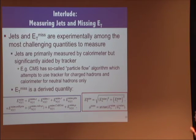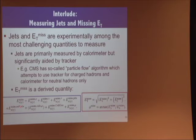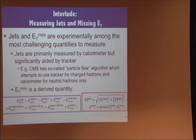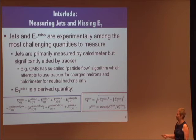Missing ET is in its very nature a derived quantity — basically the sum of missing energy contributions from electrons, photons, taus, jets, soft jets below 25 GeV, the calorimeter part of muons, and muons themselves. In some sense it doesn't get calibrated separately, but if we have calibrated all our objects separately and understood them well, then missing ET should just come out right.